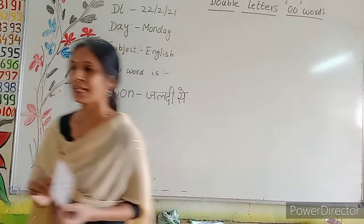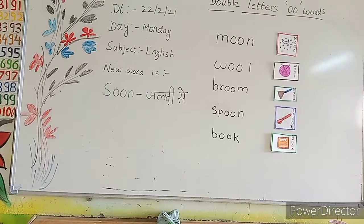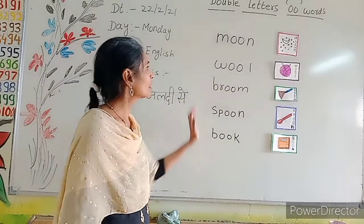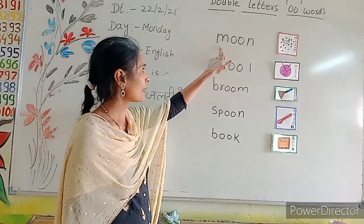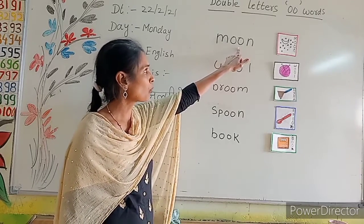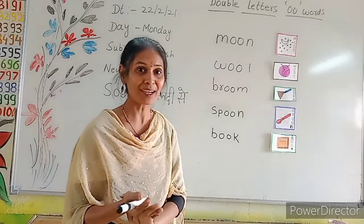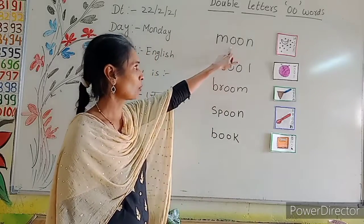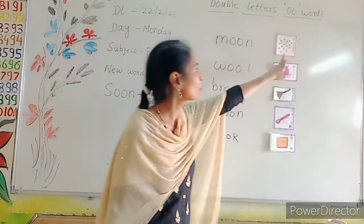Ab hum link karenge. Kuch spellings haam board par likhenge. These are the spellings which I had written on the board. So we will read all these spellings. M-O-O-N. Moon. Ab aarka term hai — bolo ye. M-O-O-N. Moon. Hei na?